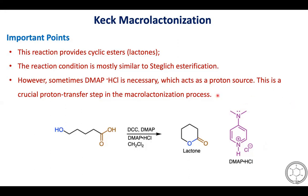DMAP hydrochloride acts as a proton source, which is crucial for the proton transfer step in the macrolactonization process. In this example, both a hydroxyl group and a carboxylic acid group are present in the same framework. When DCC, DMAP, and DMAP hydrochloride are used, this provides the corresponding lactone compound.